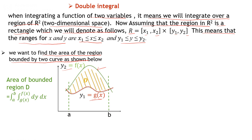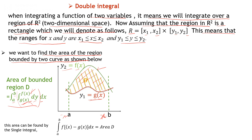To find the bounded area, we use the double integral: integrate from a to b and from g(x) to f(x) dy dx. Here the limit of y is g(x) to f(x). We first integrate with respect to y, then with respect to x from a to b. Note that this area can also be found by a single integral: from a to b of [f(x) − g(x)] dx, which gives the area of region D.